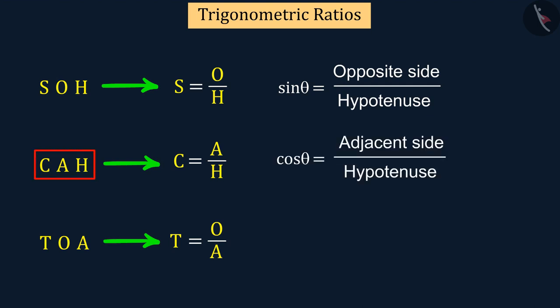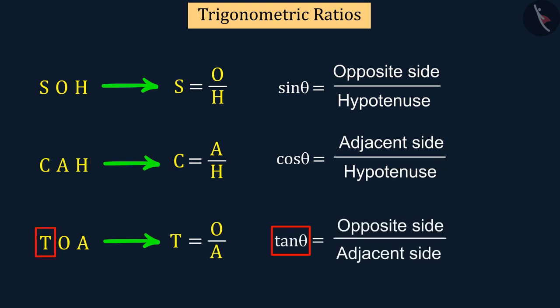In CAH, C means cos, A means adjacent side, and H means hypotenuse. And in TOA, T means tan, O means opposite side, and A means adjacent side.